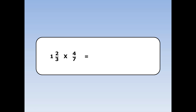1 and 2 thirds times 4 sevenths. 1 and 2 thirds is a mixed number so I must turn it into a top heavy fraction before I multiply it. 1 and 2 thirds is the same as 5 thirds.